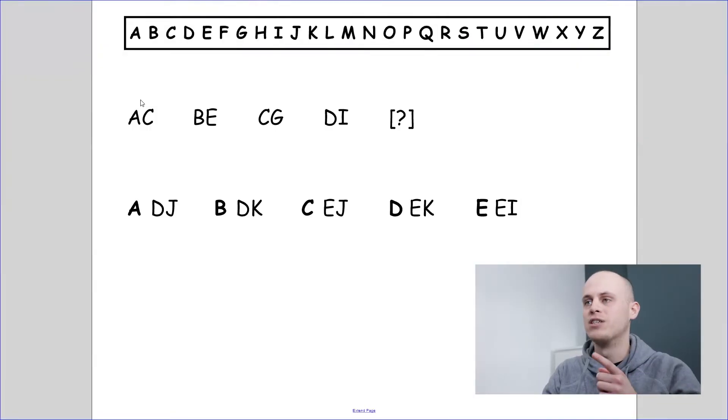Our job in this question type is to find the next pair of letters in the sequence. At first it can look quite daunting, but there's a really simple strategy to help you with all alphabet code type questions. The best thing to do is to isolate each letter in the pair. Look at the first letter of each pair and think about the pattern they make, and then do the same to the second letter separately. So let's do that.